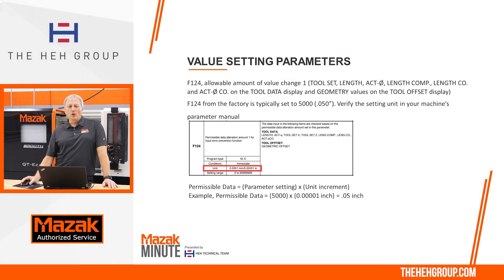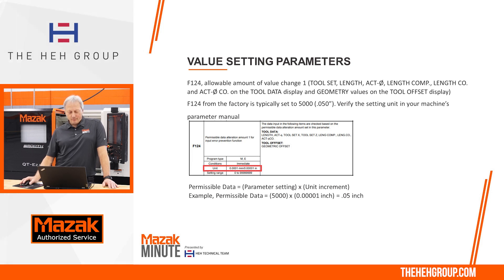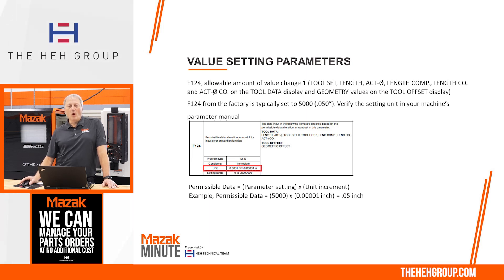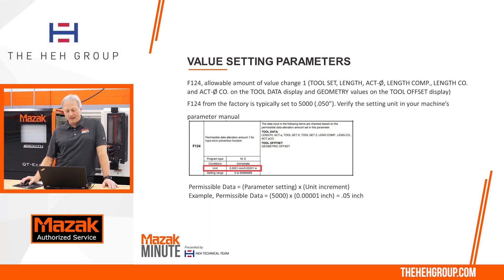For the settings, go to parameter F124. That monitors tool sets — tool length, actual diameter, length comp, corrections — and on the tool offset page it will also do the geometry. Typically from the factory this parameter is set to 5,000. The unit increment of the parameter is 0.00001, so a value of 5,000 equals 50 thousandths. As shown at the bottom of the screen: 5,000 times 0.0001 gives 50.